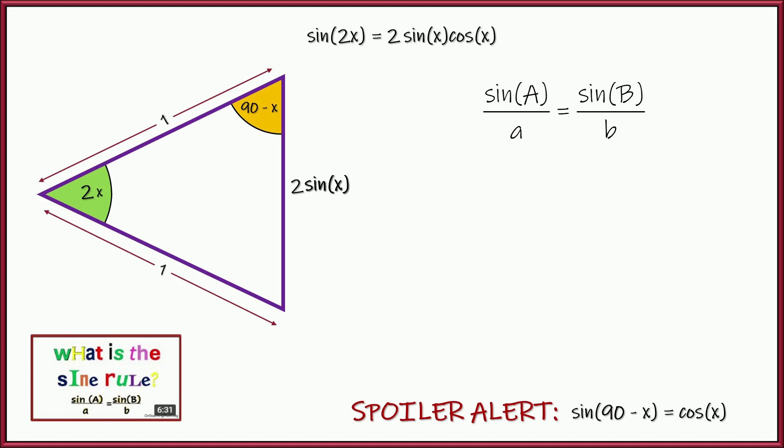And let's say that the 2x is angle a, which makes 2 times the sine of x side a. Let's plug those in. Let's do the same exact treatment for b, angle b, and side b. So we're going to say that 90 minus x is angle b, which makes its opposite side equal to 1.